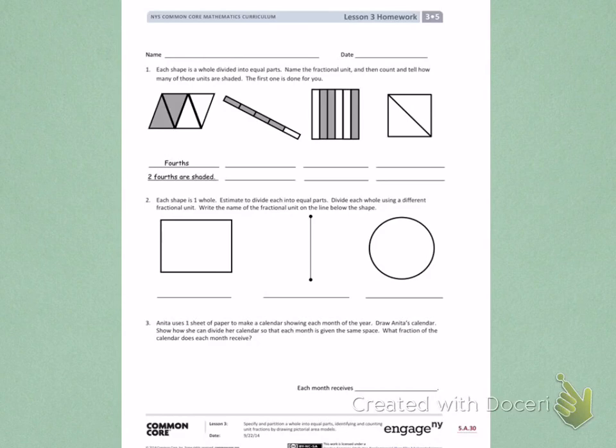Number 1. Each shape is a whole divided into equal parts. Name the fractional unit, and then count and tell how many of those units are shaded. The first one is done for you.